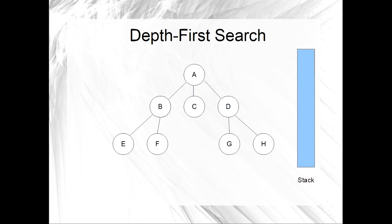First, we clear all the marks. Next, we push the starting vertex — in this case A — onto the stack. That concludes the initialization part. Now the while loop begins. While the stack is not empty, we begin an iteration by popping off a vertex and marking it. Next, we push all adjacent unmarked vertices onto the stack — in this case vertices D, C, and B. That ends the first iteration of the while loop.